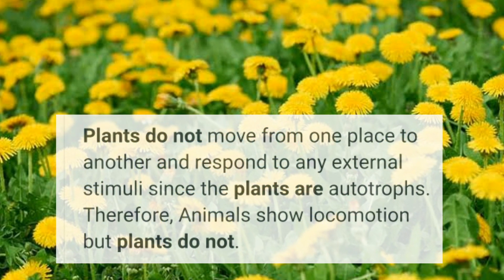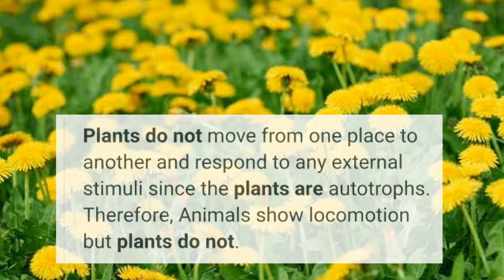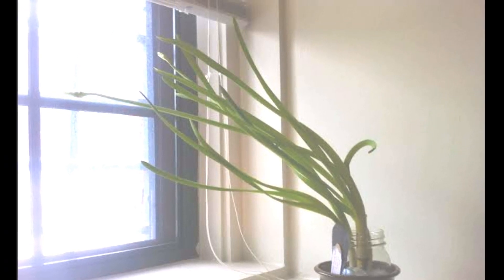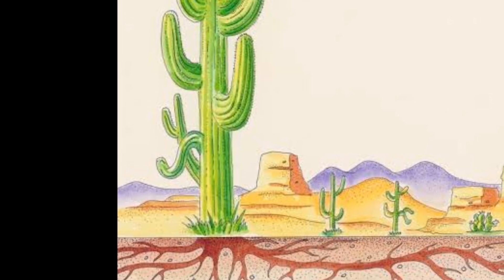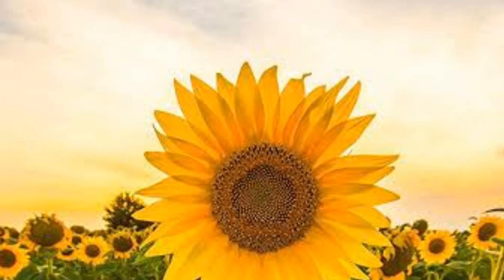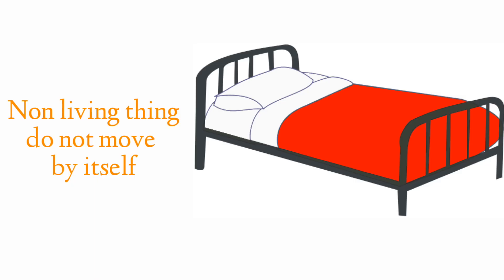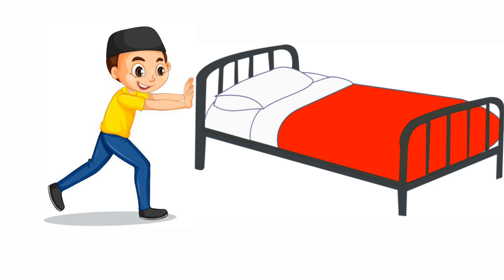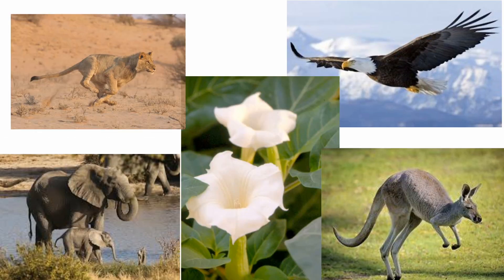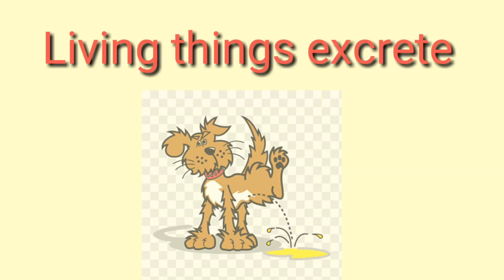Plants do not move their whole body — they remain fixed in the soil — but they can move their body parts according to a stimulus. For example, branches grow towards the sun, whereas roots spread to absorb water and minerals from the soil. Moonflower always blooms at night whereas sunflower moves towards light. Non-leaving things are moved only by an outside force, for example when we move a bed — that is by external force.